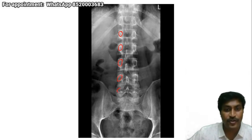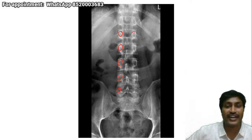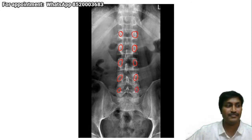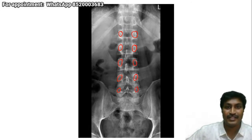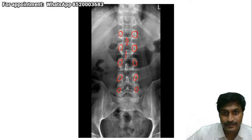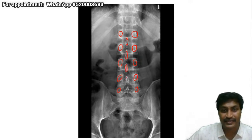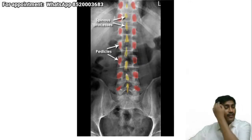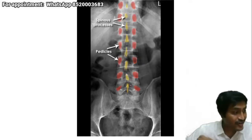To make it easy — this is the pedicle, this is the transverse process, this is the spinous process. In every level, identify the pedicles. Try to draw pedicles at each level on your screen. I will not hurry because if you don't understand this, whatever I teach in my next session will be useless. Take your time, draw the pedicles at each level, and identify the spinous process at each level.